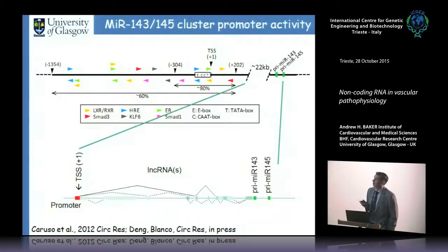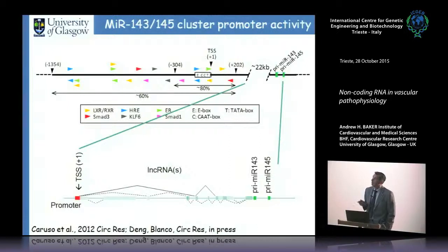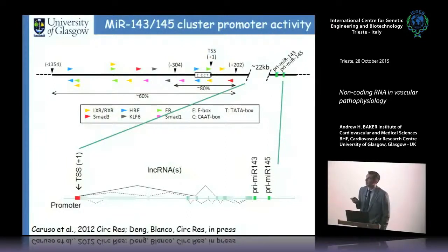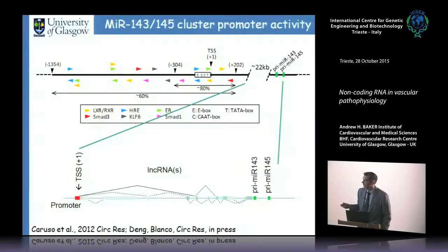The promoter contains transcription factor binding sites relevant to pulmonary hypertension: TGF-beta signaling, hypoxia, and estrogen signaling all activate sites here — we've done all the mutation analysis, published recently in Circulation Research. There are also lncRNAs between the promoter and the stem loops that appear to control this axis, though we don't fully understand their roles yet.